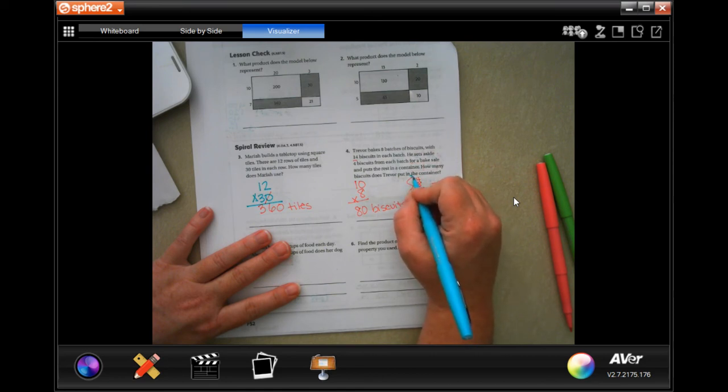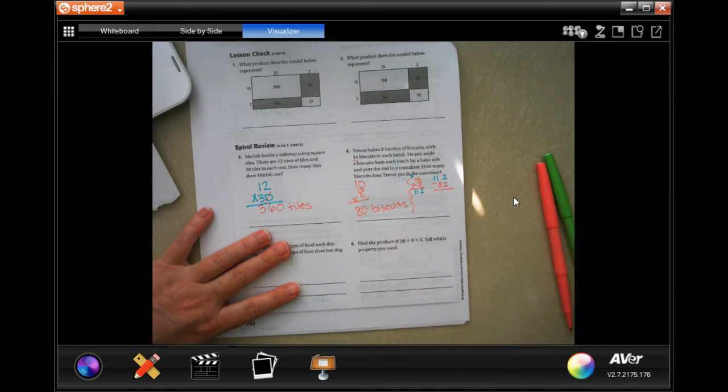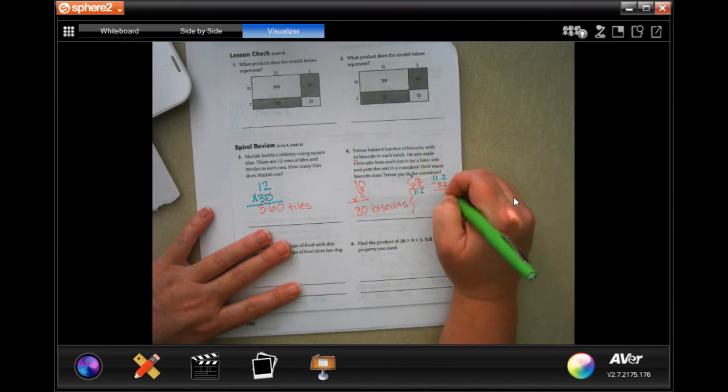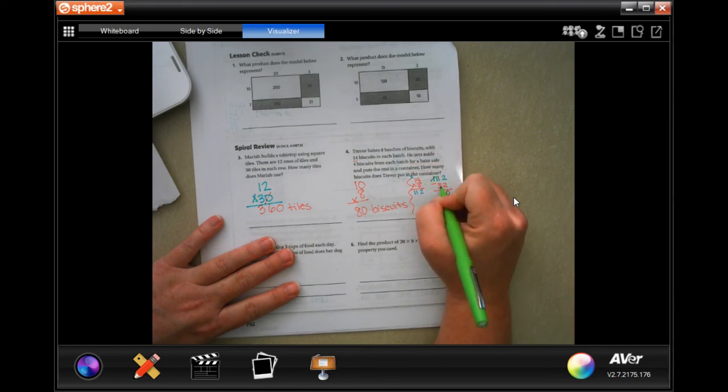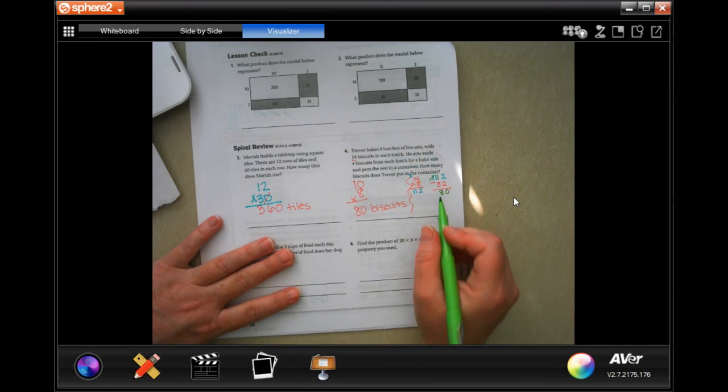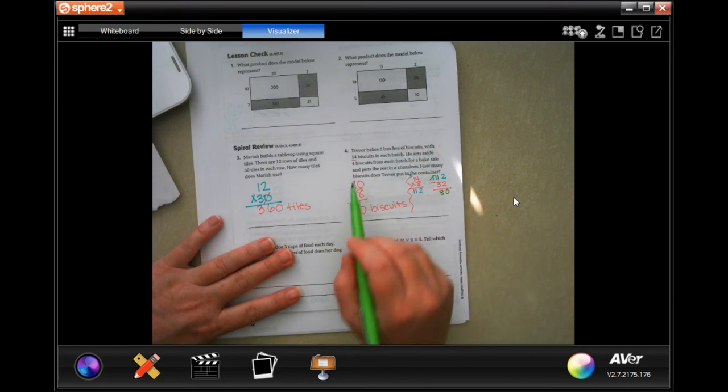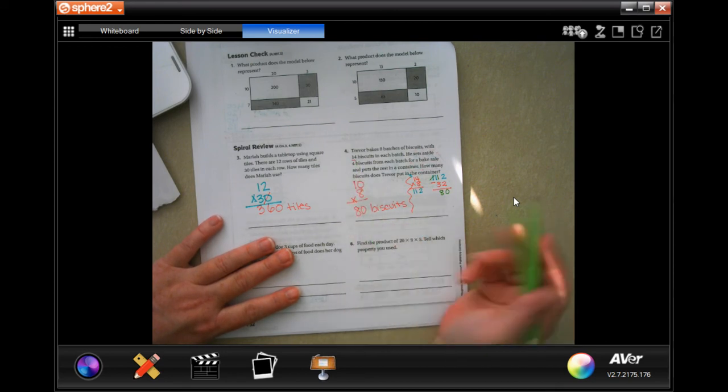Well, I could do 8 times 14 and then subtract 4 from each batch. Or I could just say 10 biscuits in 8 batches instead of 14. Because he puts aside 4 from each batch. Well, 14 minus that 4 is just 10. So, 80 biscuits. I also, I could do 14 times 8. And then take that number and subtract 8 times 4, which is 32. So, then 8 times 4 is 32. 8 times 1 is 8. Plus 3 more is 11. 112. 112 minus 32. 2 minus 2 is 0. I cannot take 3 away from 1. So, I'm going to make that an 11. And 11 minus 3 is 8. Same answer.